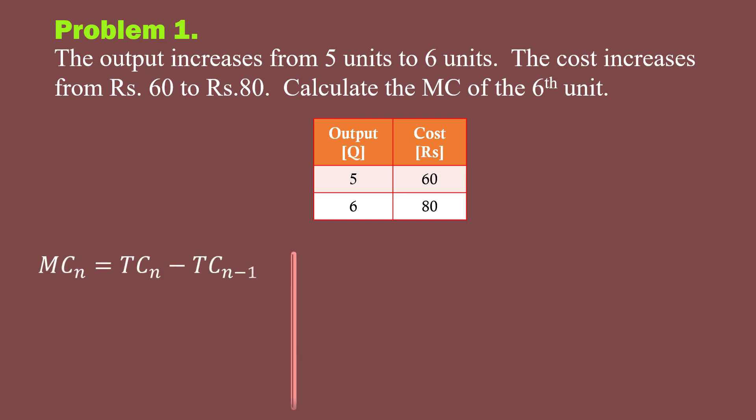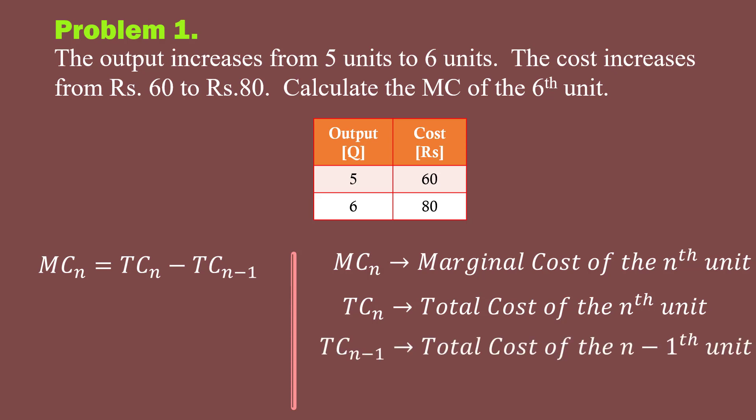We shall use the formula MC of n equals TC of n minus TC of n-1. Understand what each term represents: MC of n is marginal cost of the nth unit, TC of n is total cost of the nth unit or current unit, TC of n-1 is total cost of the n-1th unit.